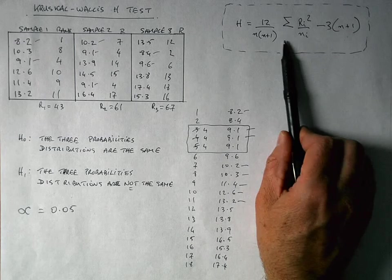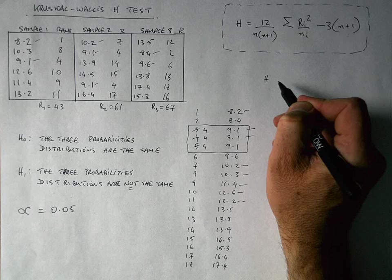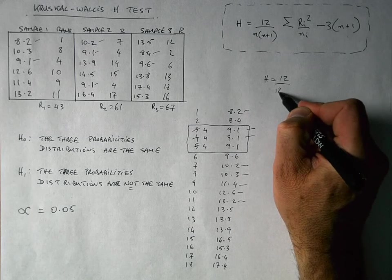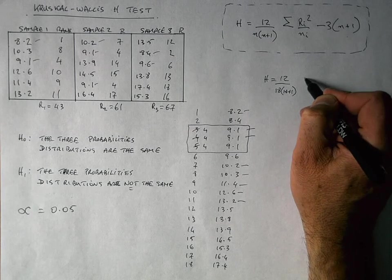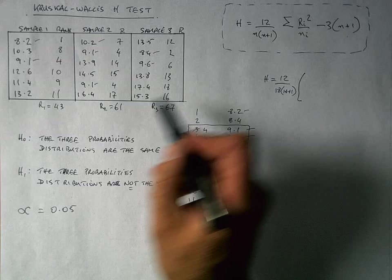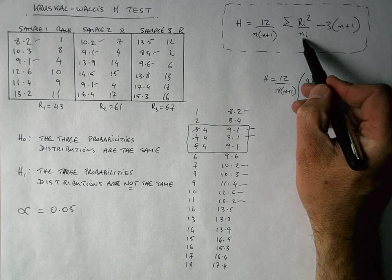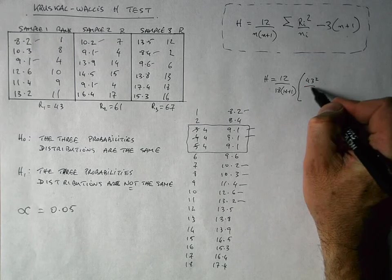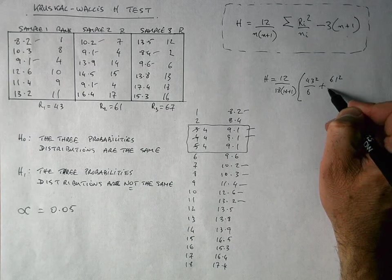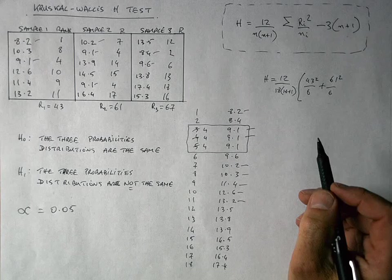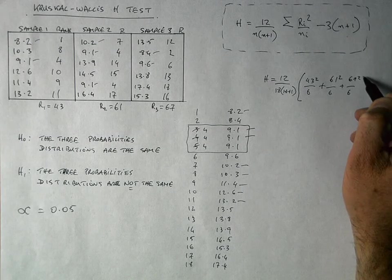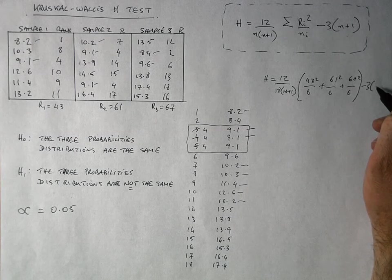The next bit then is to put my values into my formula over here. So let's rewrite my formula out here. So the H statistic is equal to 12 divided by N, which I've already determined is 18, the number of values, multiplied by 18 plus 1. And then I'm going to multiply that by the sum of each of my three sets here. So R1 squared is going to be 43 squared divided by the number N in the first samples. But that's going to be six. And then I'm going to add that because I'm summing here, don't forget, to R2, which is 61 squared. Divide that by six again because I've got six values in sample two. And finally, add that then to the sum for rank three, which is 67 squared divided by six. And we multiply that by minus three times 18 plus one.